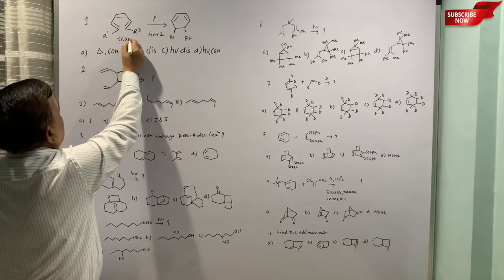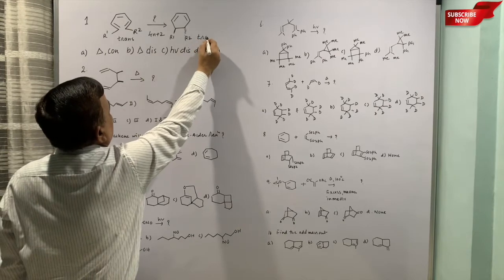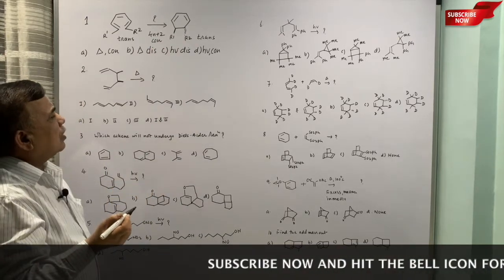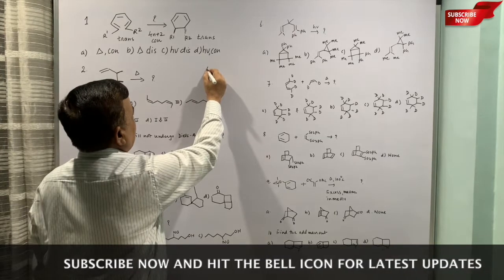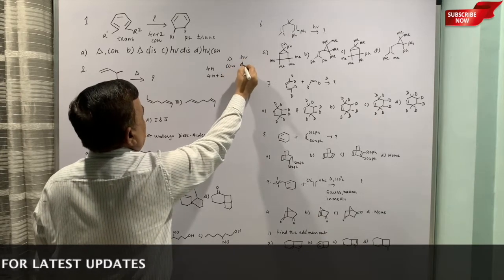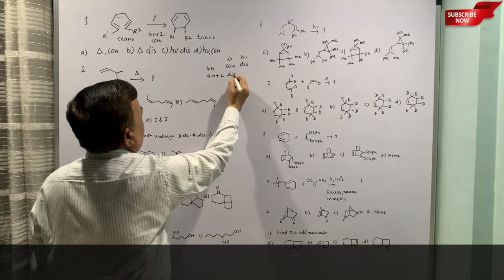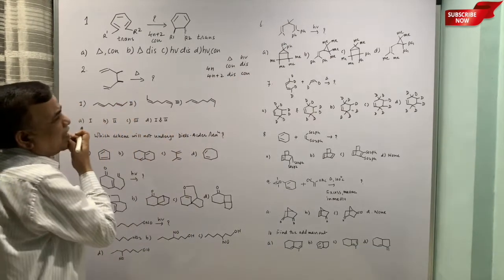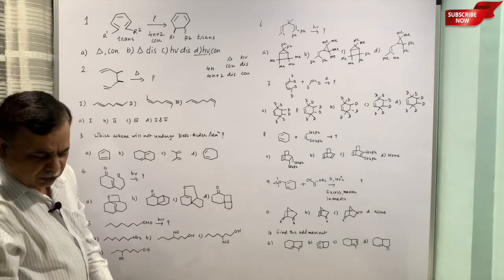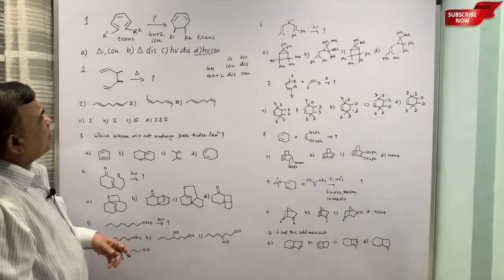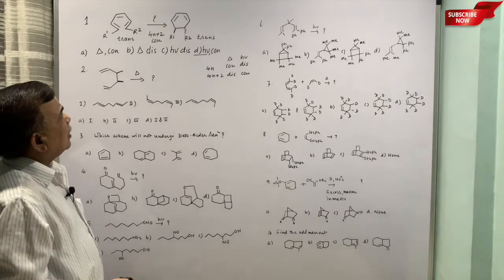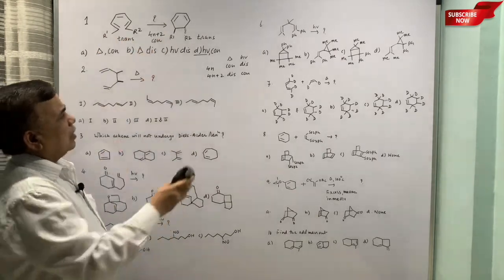And 4n+2, now these groups are trans initially, they are remaining trans, so this has to be con. So 4n+2 con has to be, we have written 4n, 4n+2 thermal con photochemical dis. So photochemical is con, so the correct answer is photochemical con, the last one.